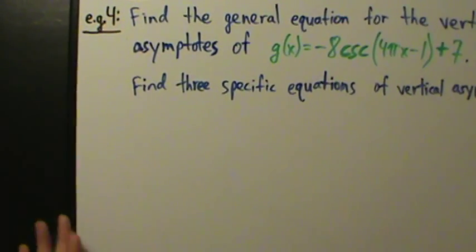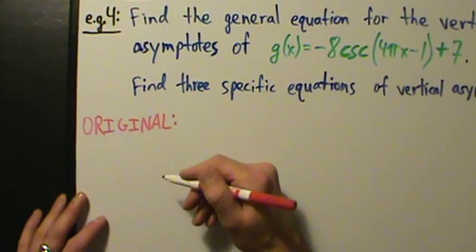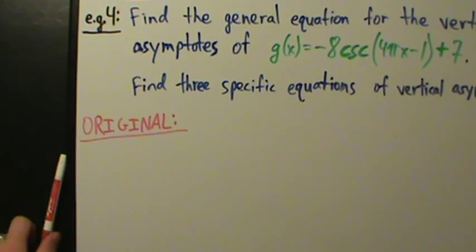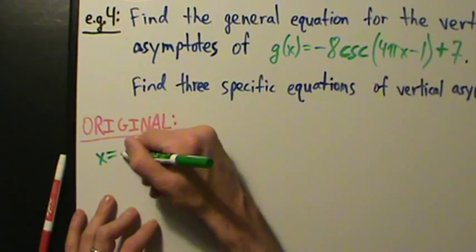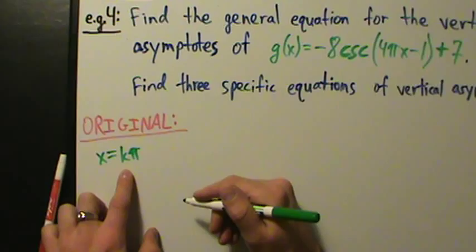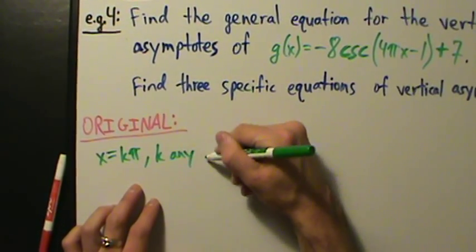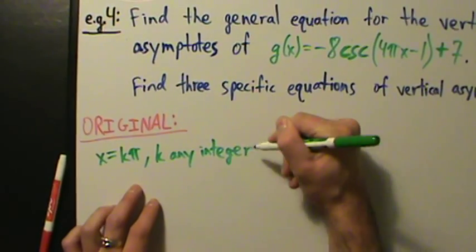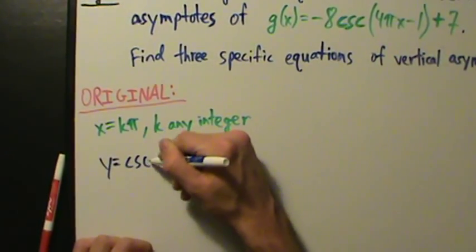We start the same way we started all the others: write the original equations of the vertical asymptotes for the original cosecant function. Just like for the cotangent function, for the original cosecant the vertical asymptote general equation is x = kπ. The reason is that cosecant is 1/sine, and sine(x) = 0 when x = kπ, so cosecant is undefined there, meaning it has vertical asymptotes at x = kπ, where k is any integer. That's for y = csc(x).